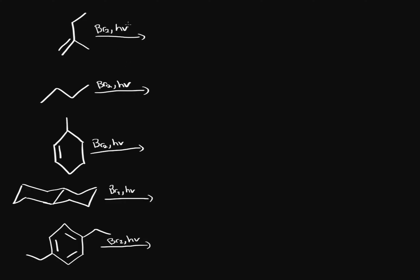When you have bromine and UV light brought together, you're going to form a radical on the molecule. Guess where that radical is going to go? It's going to go to the most stable position.